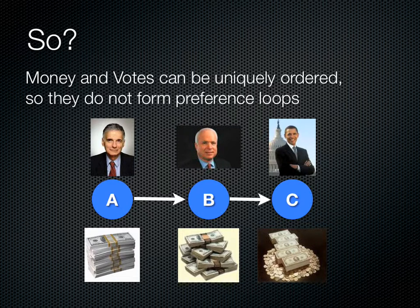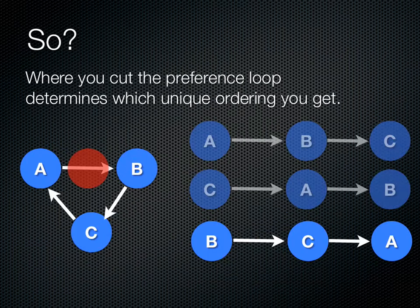Money and votes can be uniquely ordered, so they do not form preference loops. The reason that's important is that where you cut the preference loop determines which unique ordering you get. I might like berries better than apples and carrots better than berries, but I might like apples better than carrots. And if I make a choice to start with berries and carrots, I'll end up choosing apples.